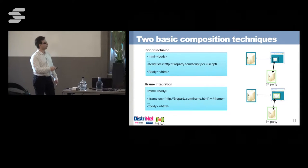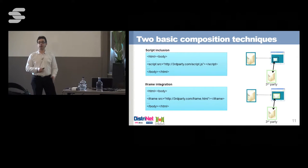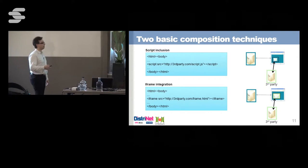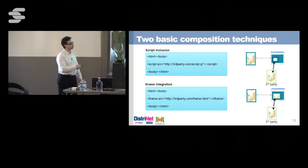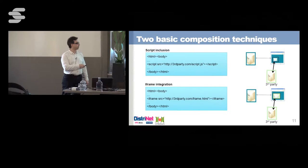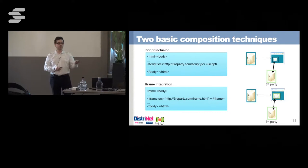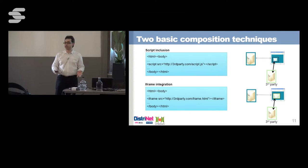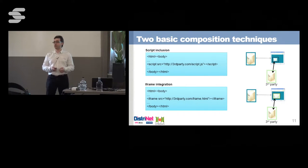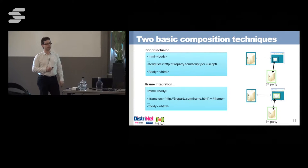In contrast, if you're using iframes with different origins you have two different security contexts and the same origin policy kicks in. Content running in the iframe of a third party will not be able to access data in the outer frame — this is a very hard isolation you can use in your application. Typically you want something in between: interact in a controlled way with your third party, while your third party remains isolated for most things. We will see some techniques today on how you can achieve that.